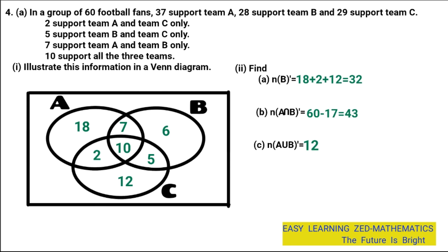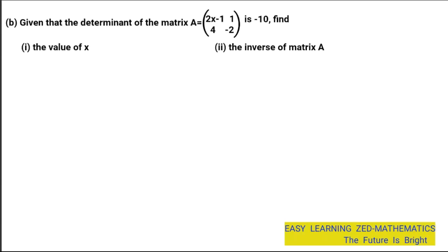Question 4B: given that the determinant of matrix A is equal to negative 10, where matrix A is the 2x2 matrix with elements 2x minus 1, 1, 4, negative 2 — find the value of X and the inverse of matrix A.